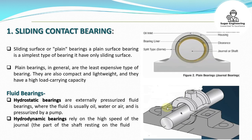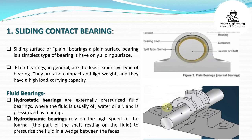Fluid bearings include hydrostatic and hydrodynamic types. Hydrostatic bearings are externally pressurized fluid bearings where the fluid is usually oil, water, or air, and is pressurized by a pump. Hydrodynamic bearings rely on the high speed of the journal — the part of the shaft resting on the fluid — to pressurize the fluid in a wedge between the faces.